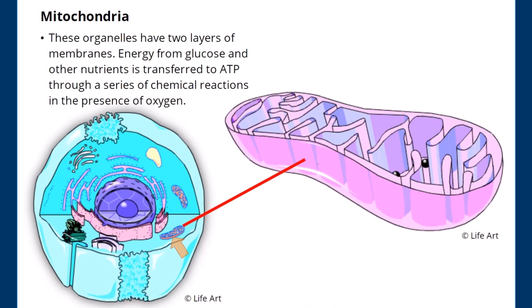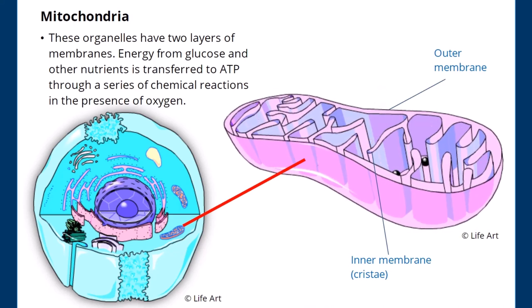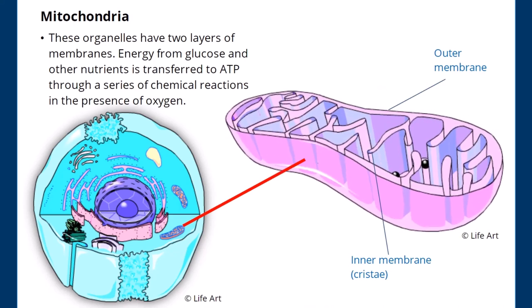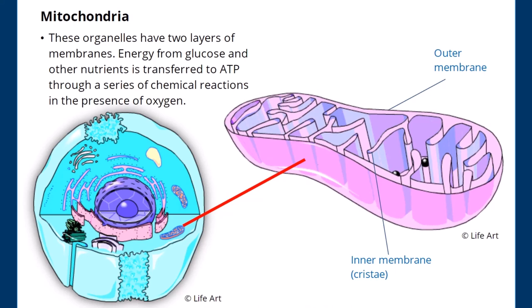Mitochondria. These organelles have two layers of membranes. Energy from glucose and other nutrients is transferred to ATP through a series of chemical reactions in the presence of oxygen.